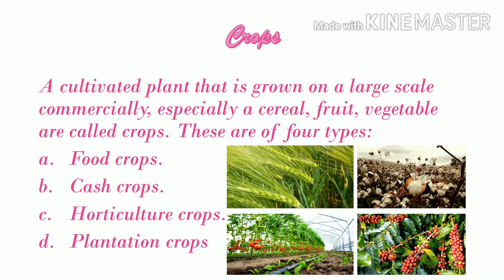Fruit crops include wheat, rice, maize, and millets. Cash crops include sugarcane, tobacco, jute, cotton, and oil seeds. Horticulture crops are fruits, vegetables, and flowers. Plantation crops are tea, coffee, coconut, and rubber. Crops need water and nutrients from the soil to grow well. Nutrients are provided by manures and fertilizers. Specific fertilizers provide one or more nutrients, whereas manures generally improve soil fertility by increasing the humus content.